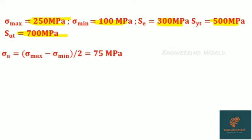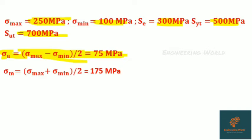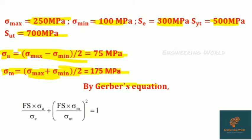Sigma amplitude equals (sigma max minus sigma min) divided by 2, that is 75 MPa. Then sigma mean equals (sigma max plus sigma min) divided by 2, that is 175 MPa. By Gerber's equation: factor of safety × sigma a / sigma e plus (factor of safety × sigma m / sigma ut)² equals 1. Here, sigma a represents stress amplitude, sigma e represents endurance strength, sigma m is mean stress, and sut is ultimate tensile strength.